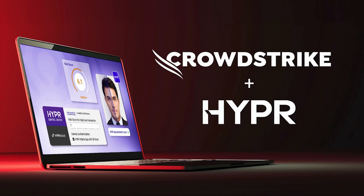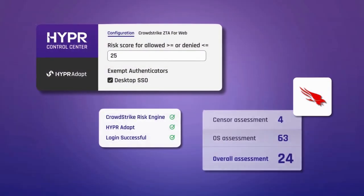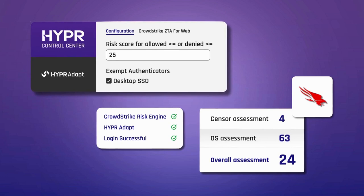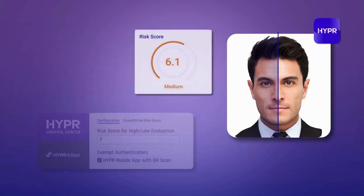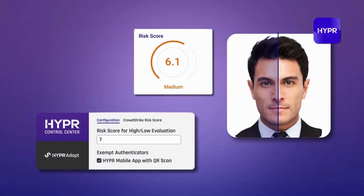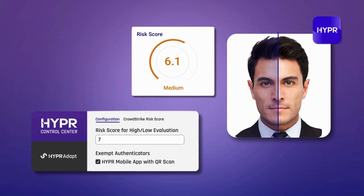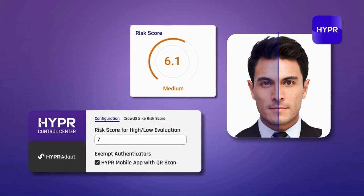With Hyper and CrowdStrike together, you can enforce user and device trust, automate continuous authentication and remediation actions, and maximize your security spend. Enforce user identity and device trust by ingesting Hyper's ADAPT risk signals, combined with CrowdStrike's Zero Trust Assessment or Identity Protection scores.